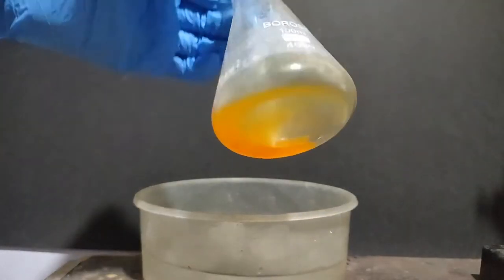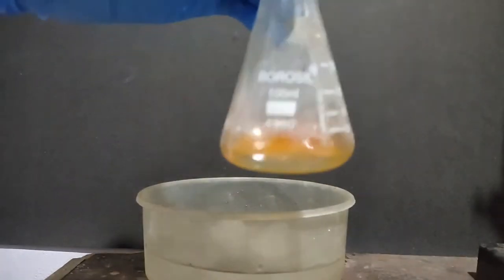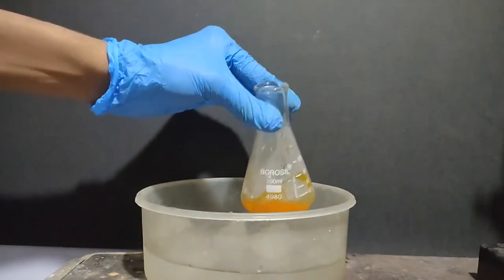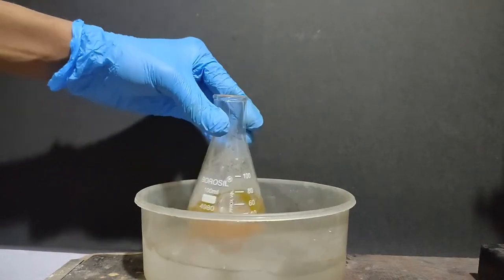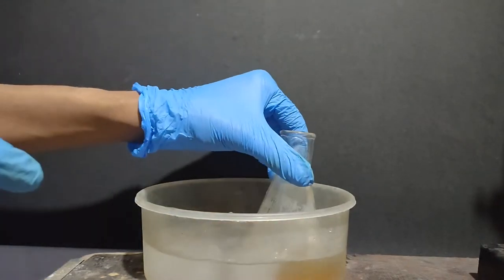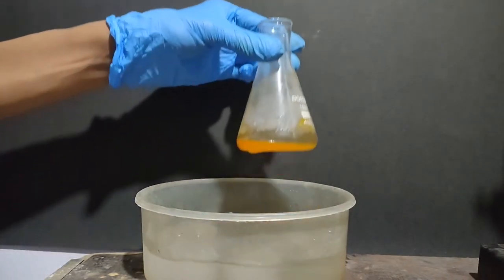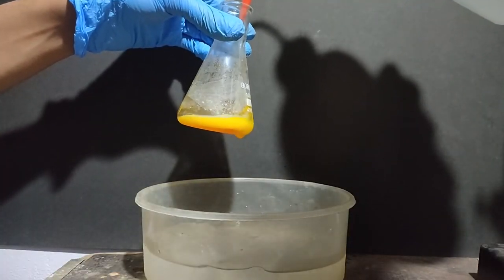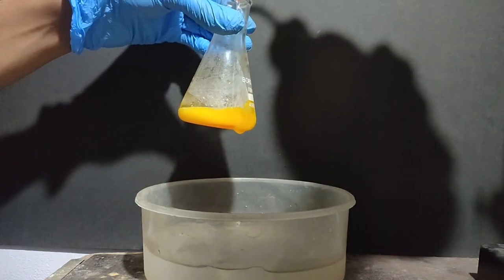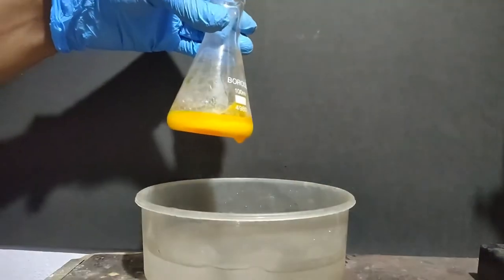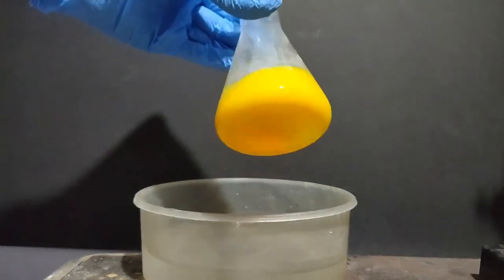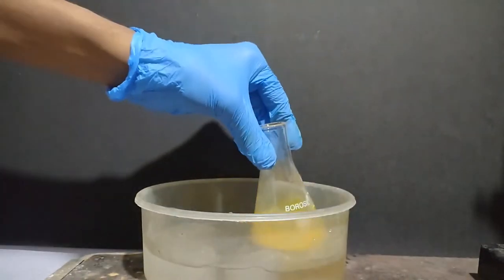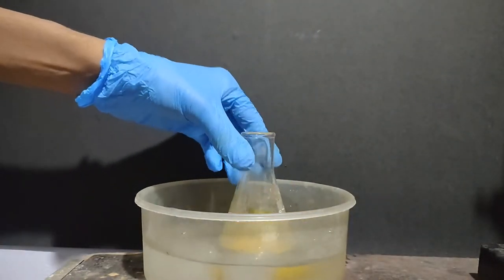After 2 hours, the flask was removed from water bath and you could see some yellow solid already precipitating. I kept it in an ice bath and after cooling I added 10-20 ml of water and a yellow precipitate is immediately formed. Then I again kept it in the ice bath to precipitate most of the picric acid.